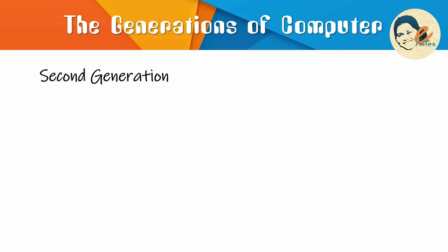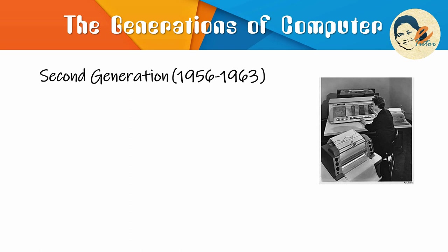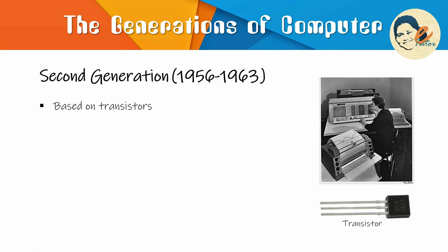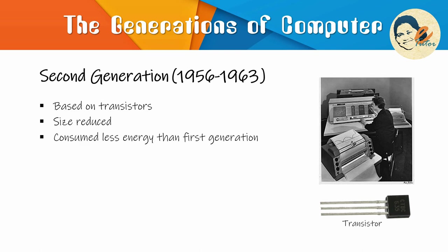The period 1956 to 1963 is roughly considered as the period of second generation of computers. The second generation computers were developed using more reliable transistors instead of vacuum tubes. This resulted in reducing the size of the computer compared to the first generation. They also consumed less energy and did not produce as much heat. In comparison to the first generation, the size of the second generation was smaller and computing time was lesser.